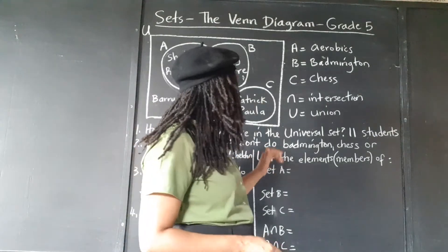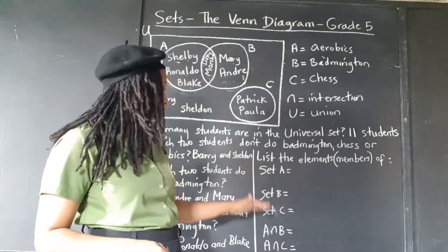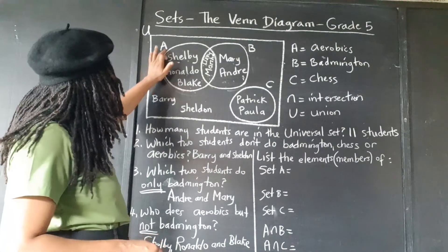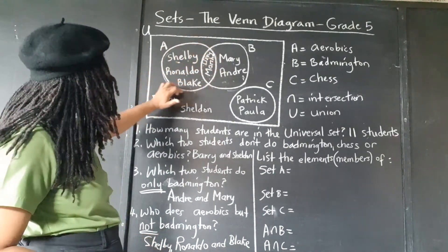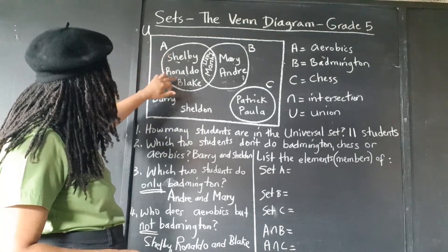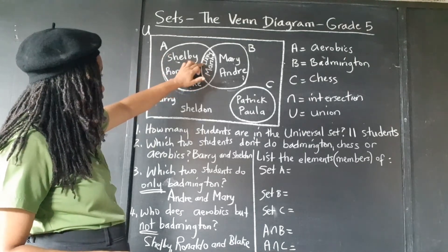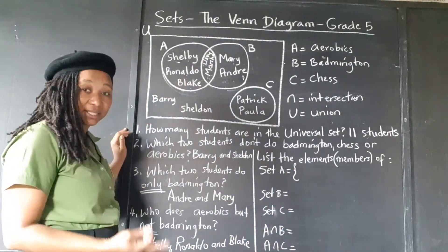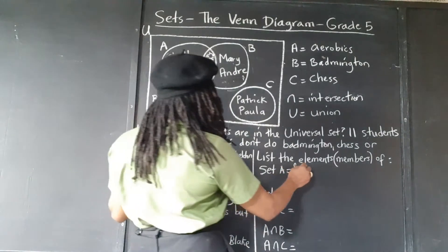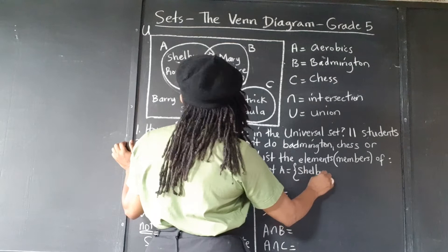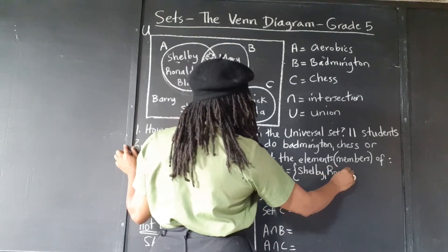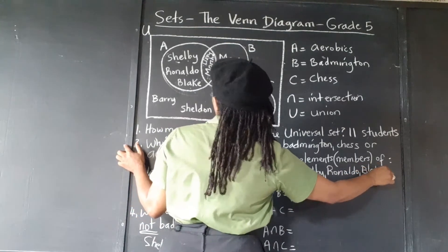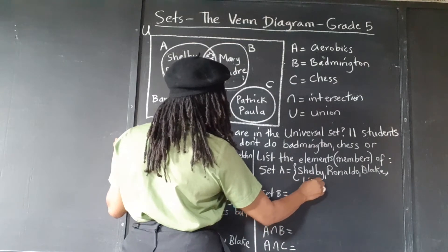Now we're being asked to list the elements or members of these sets. Who is in set A? That's the circle for set A — so that's Shelby, Ronaldo, Blake. And remember, Lizzie and Marsha are in set A too. So there are five students: {Shelby, Ronaldo, Blake, Lizzie, Marsha}.